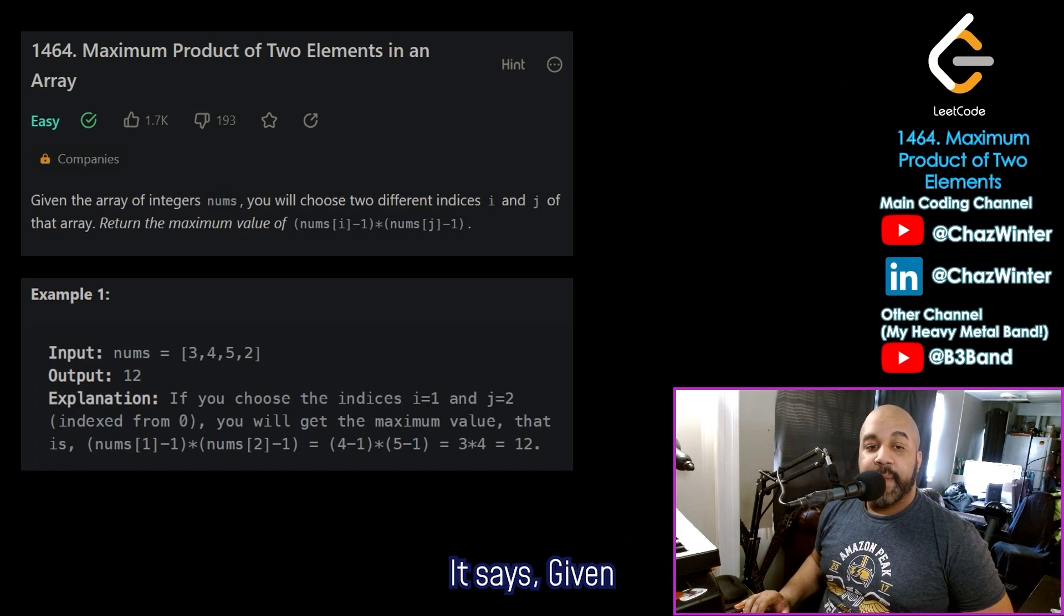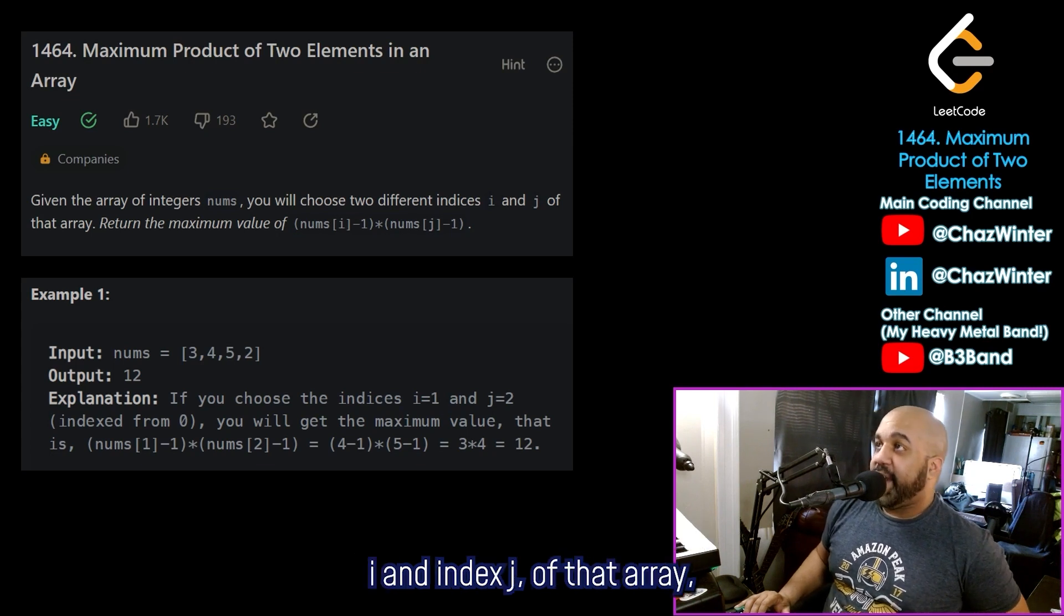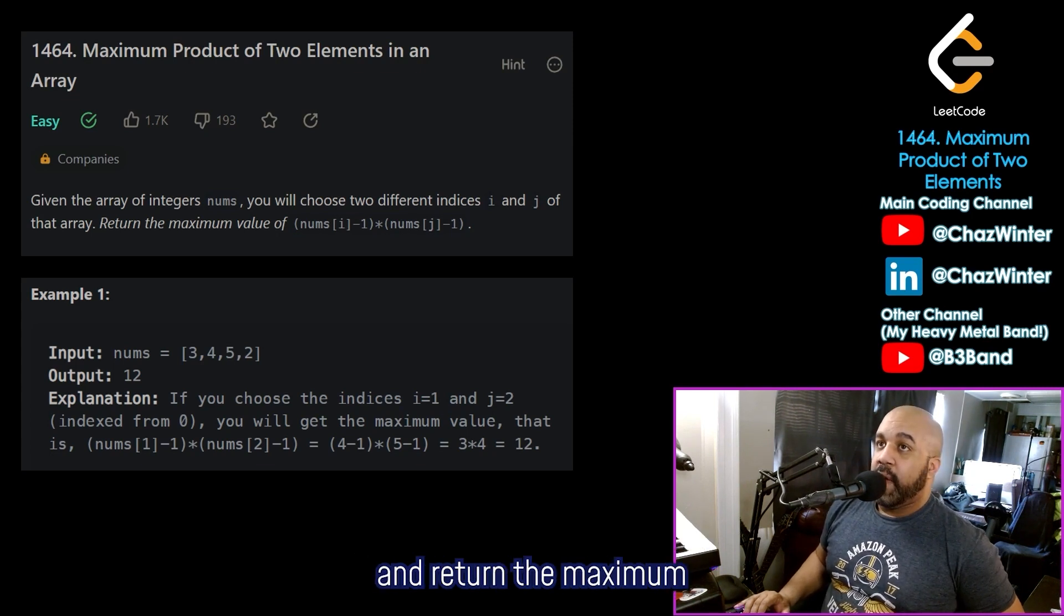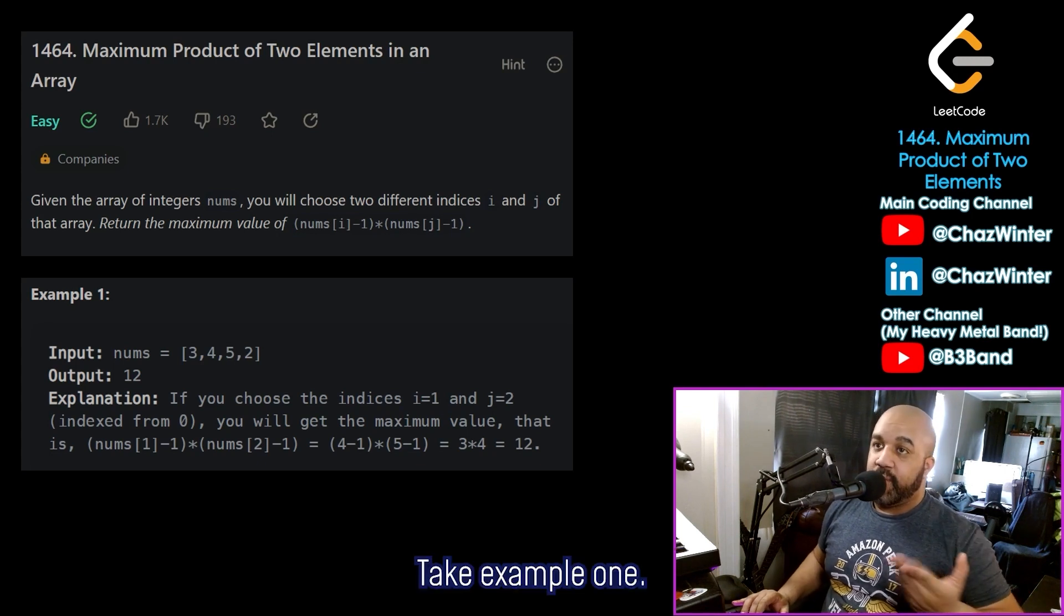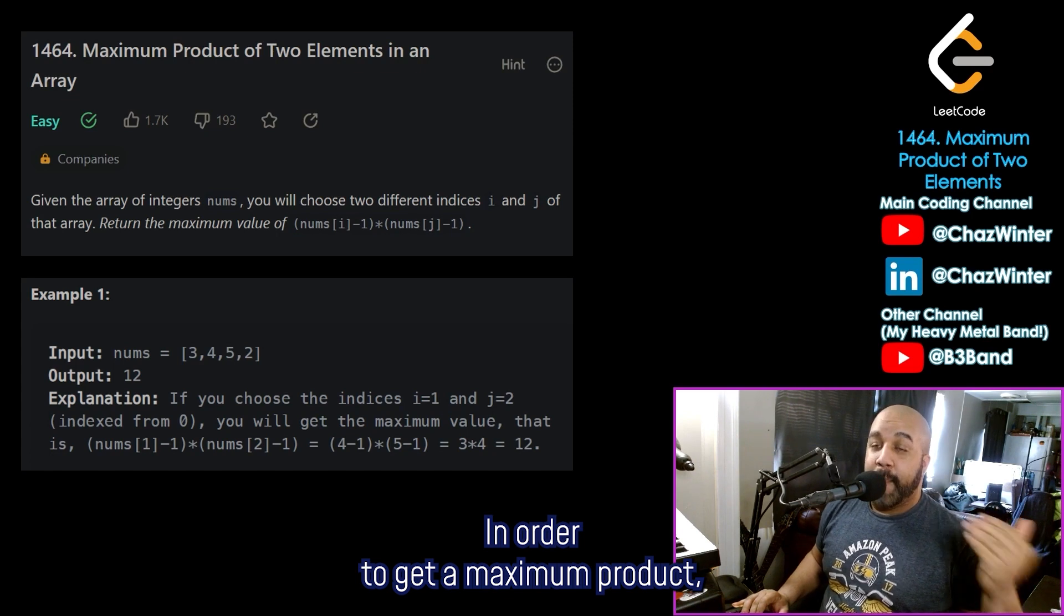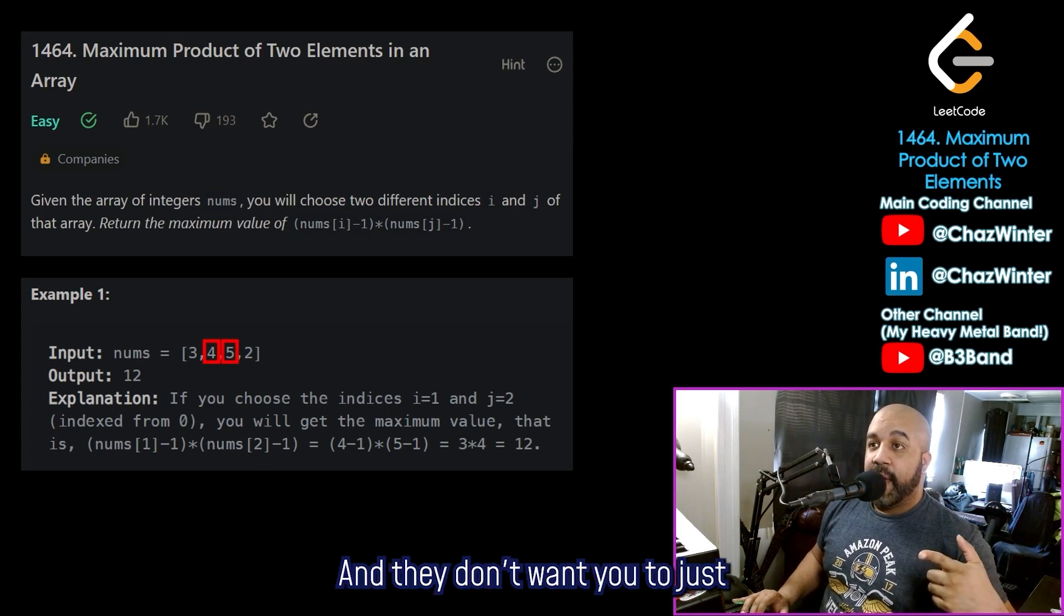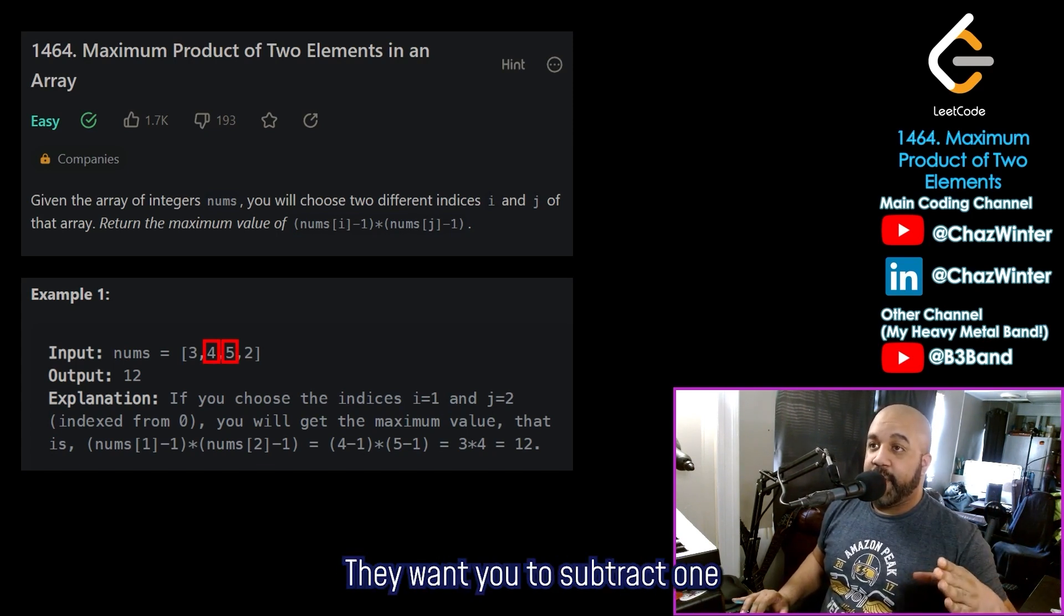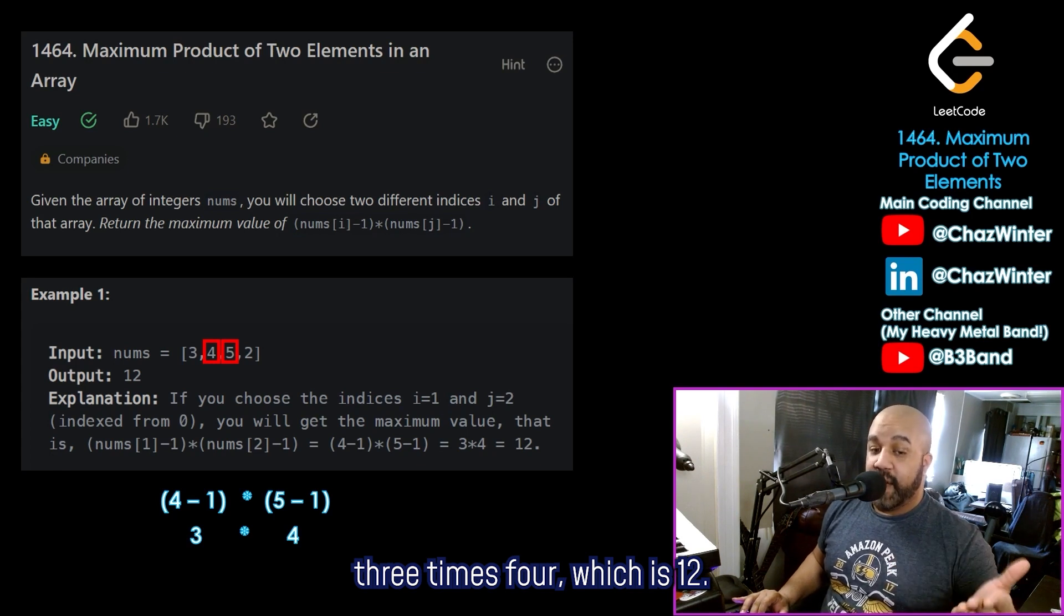All right, so let's take a look at the problem statement. It says given the array of integers called nums, you will choose two different indices, index i and index j of that array, and return the maximum value of nums at i minus one times nums of j minus one. So this is best explained with an example. Take example one here. I have an array containing three, four, five, and two. In order to get a maximum product, we're going to need the two largest values in this array, which are the four and the five. And they don't want you to just multiply four times five. They want you to subtract one from each of those numbers. So you're not multiplying four times five. You're multiplying three times four, which is 12. And so we return 12.